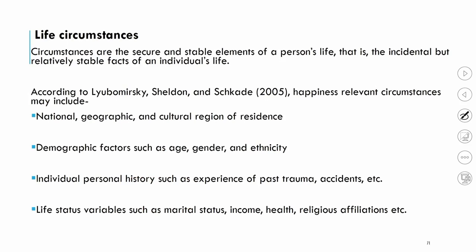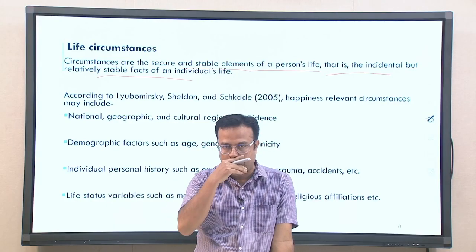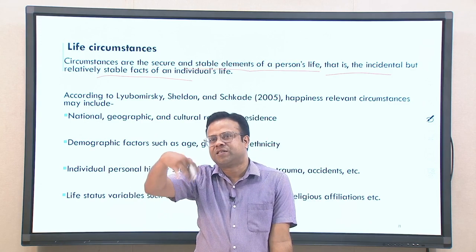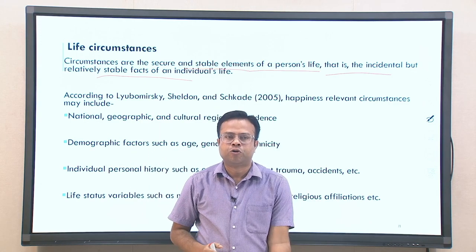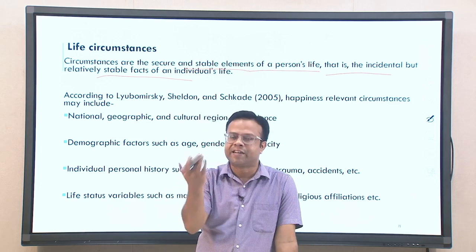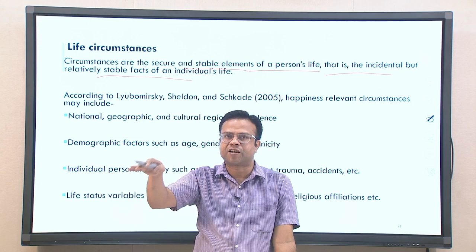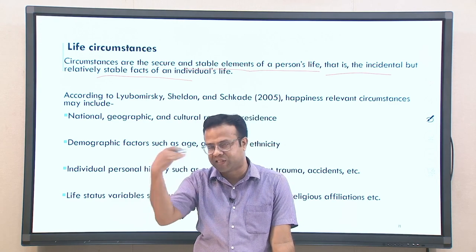The next factor is life circumstances — relatively stable, incidental elements of our life. These are things we are given after birth that we did not choose; they come with our existence and circumstances. Most life circumstances are stable incidental factors that do not change very often. Happiness-relevant life circumstances include national, geographic, and cultural region of residence, as well as demographic factors such as age, gender, and ethnicity.